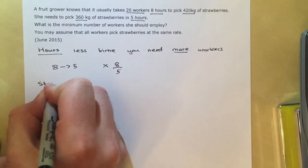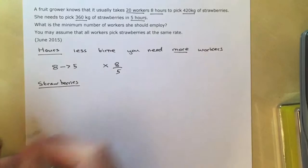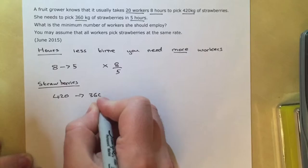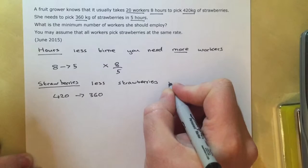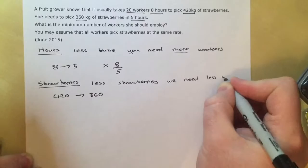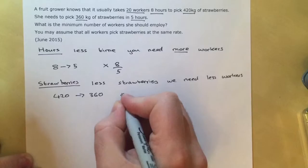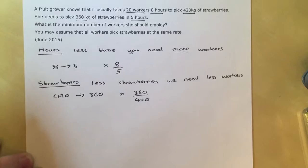We then look at the number of strawberries picked. Now for the strawberries picked, we're going from 420 kilograms to 360 kilograms. Now to pick less strawberries, we will need less workers. So we need to make our fraction with the smallest number on top.